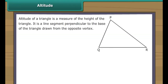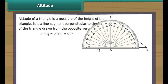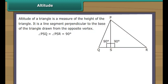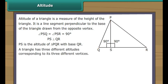Altitude. The altitude of a triangle is a measure of the height of the triangle. It is a line segment perpendicular to the base of the triangle drawn from the opposite vertex. In the figure, line segment PS is a perpendicular drawn from vertex P to the base QR. It intersects QR at right angles. Therefore PS is the altitude of triangle PQR with base QR. A triangle has three different altitudes corresponding to its three different vertices.